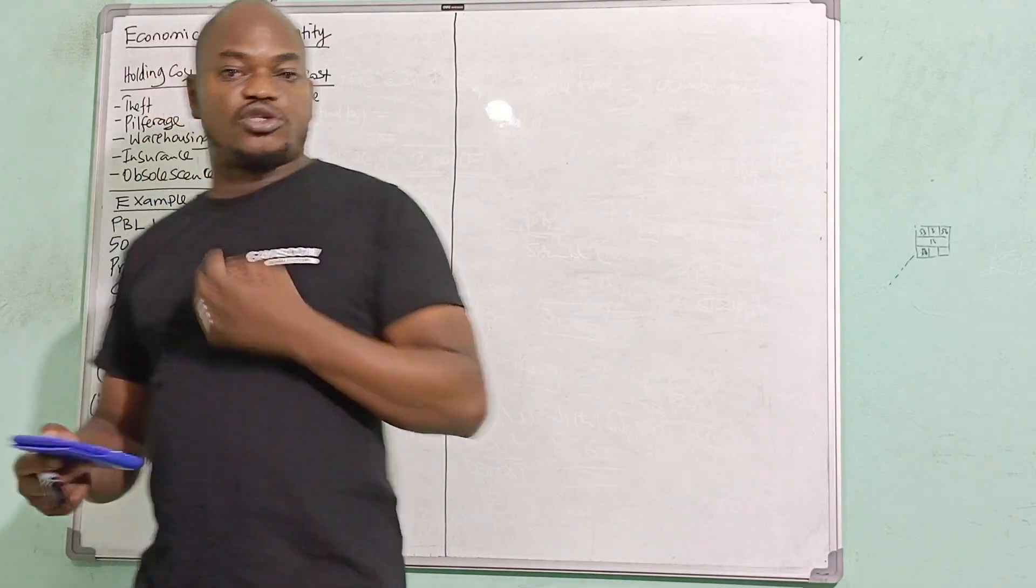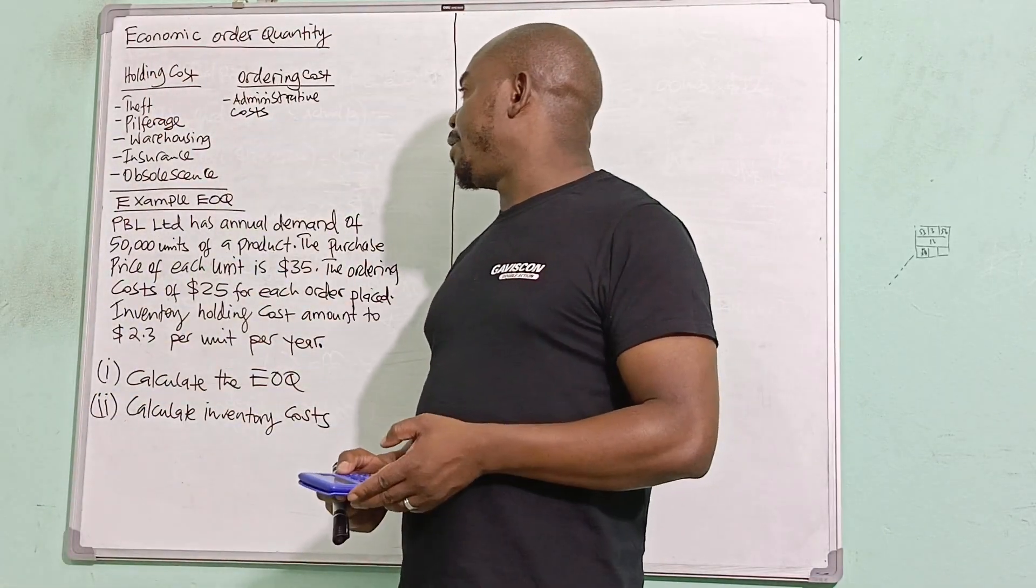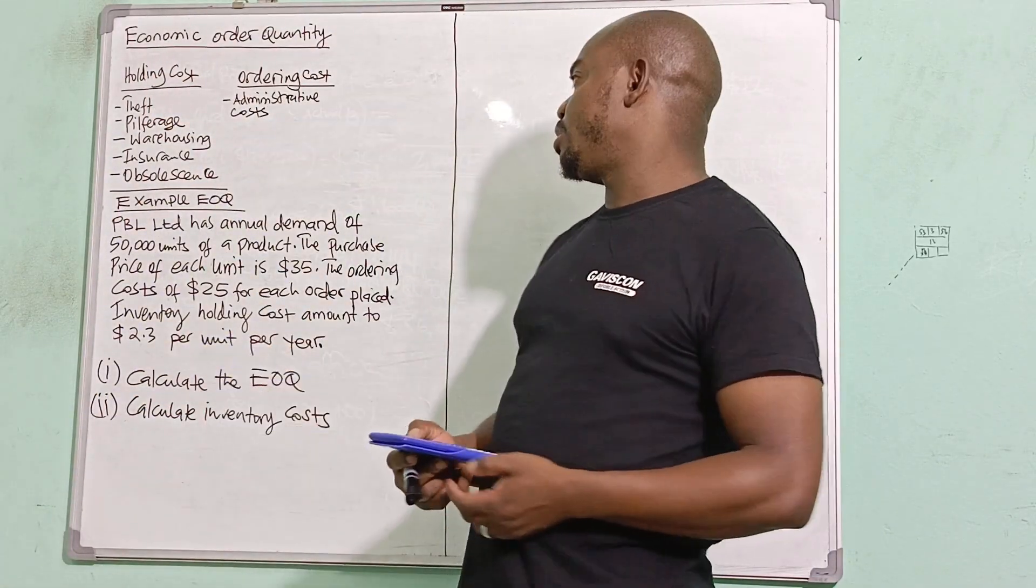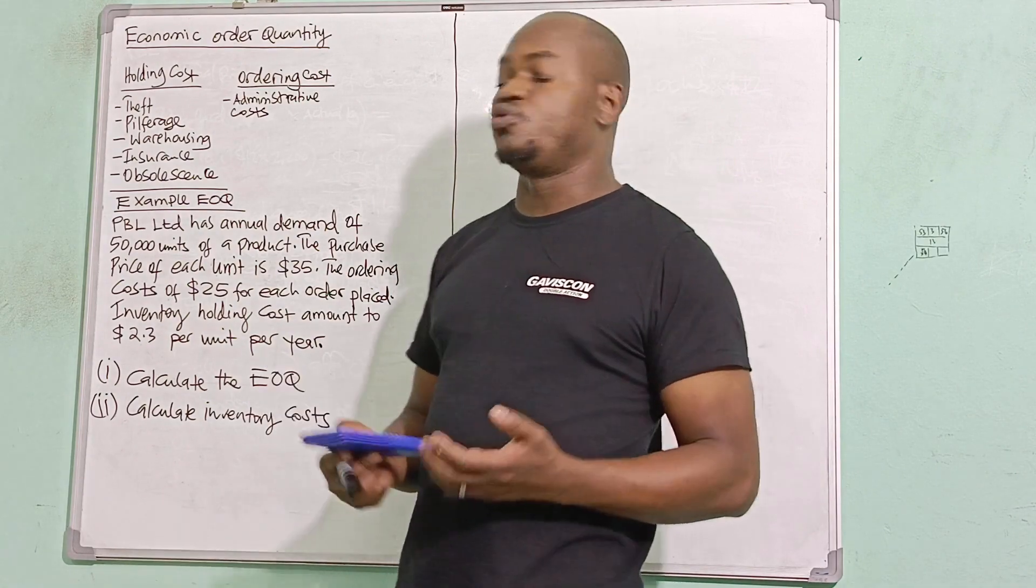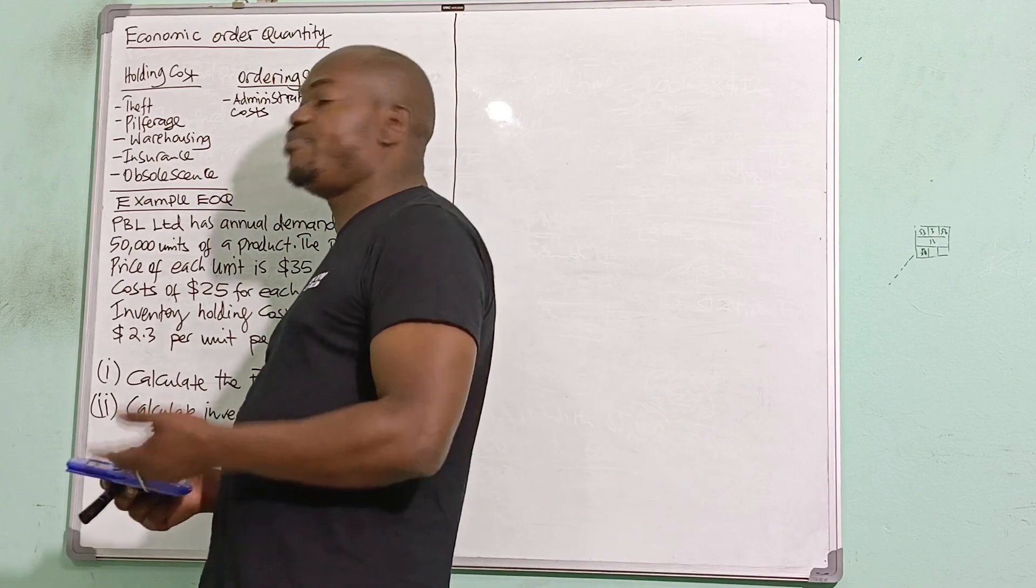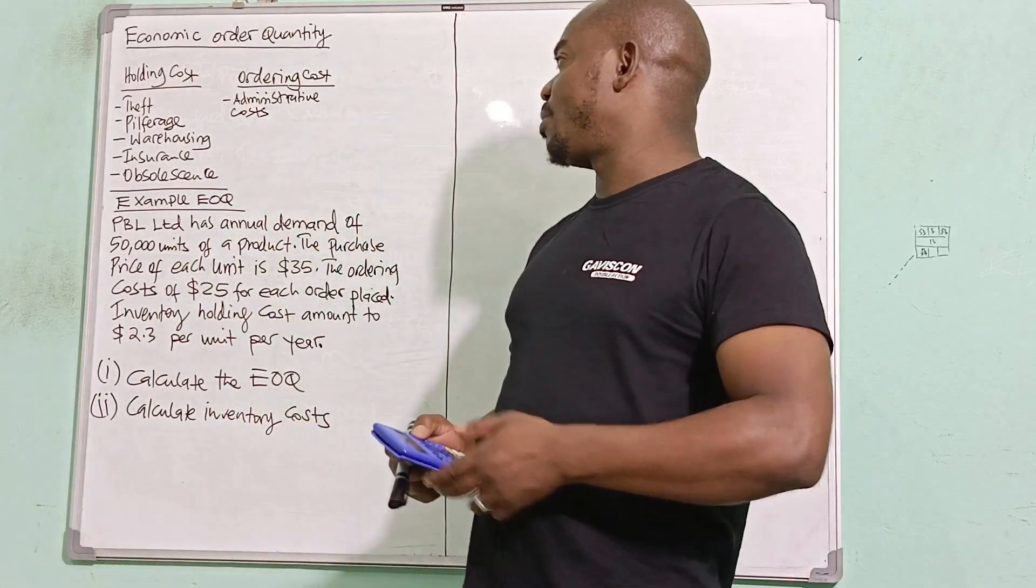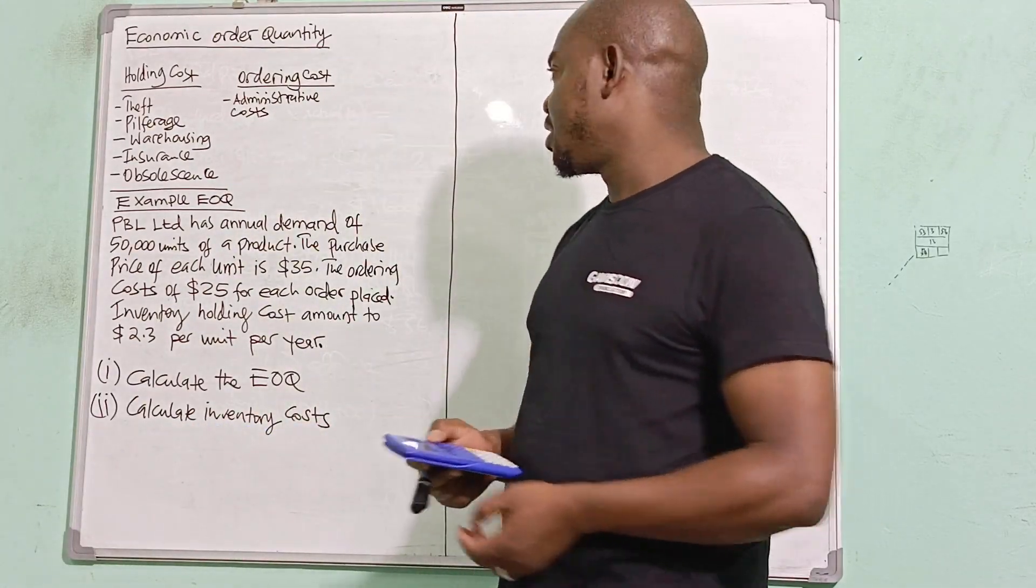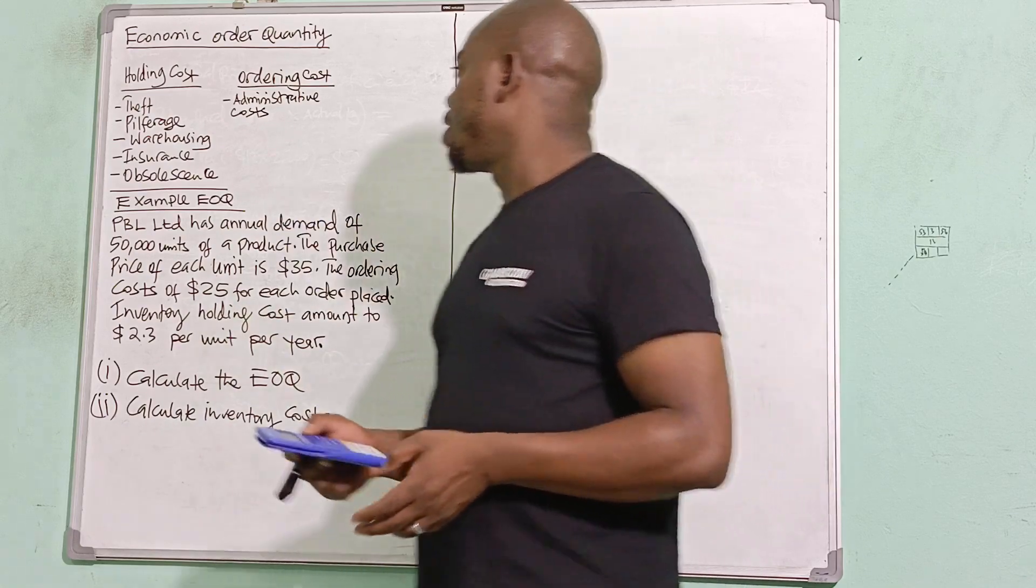Warehousing—this could be rental costs. Sometimes you might be renting a warehouse where you are putting goods which you are holding. And then insurance: you are insuring the goods probably maybe against fire or probably even against theft and something like that. So all these are costs of holding inventory.